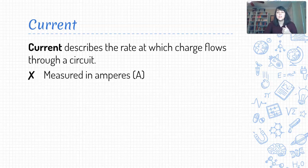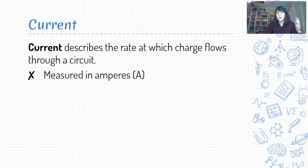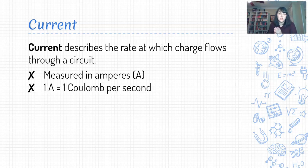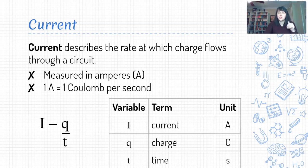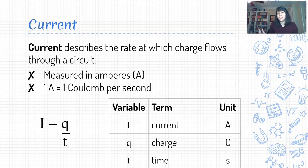These charged particles are typically electrons, or could be other types of ions, but in any case we're talking about some sort of electrical charge moving along through a predefined pathway. We measure current in the units of amperes, abbreviated with a capital A. One ampere of current describes a rate of one coulomb of charge passing through a particular point each second.